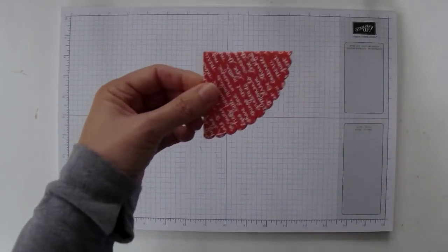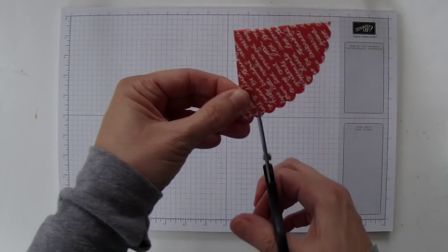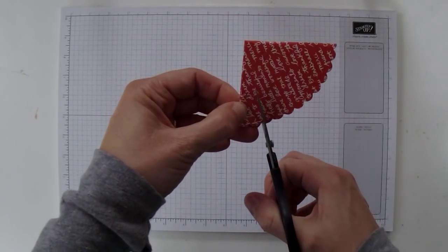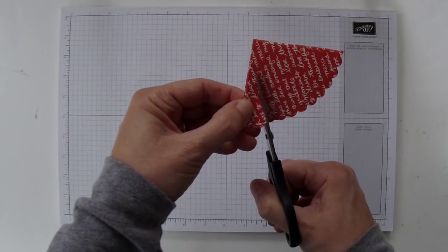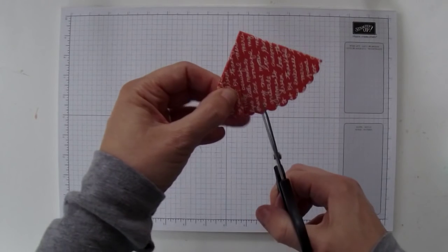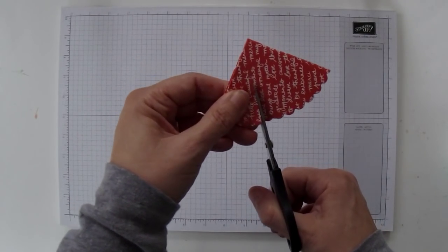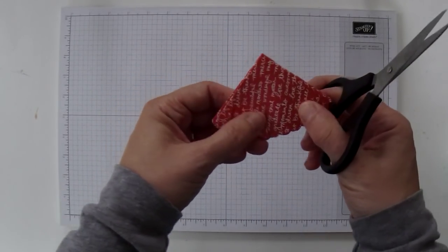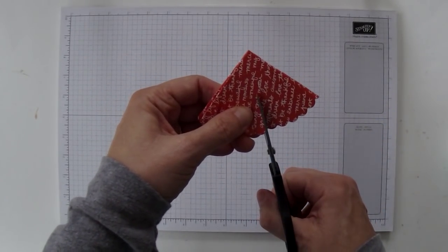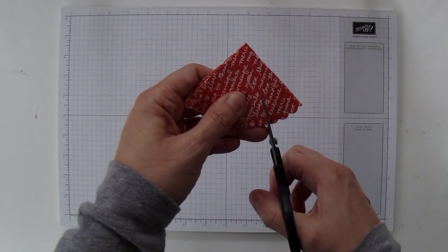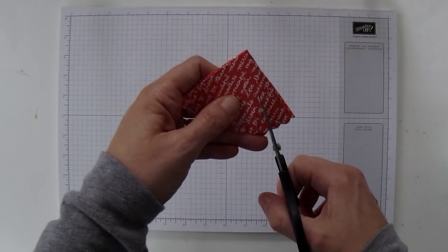And then we're going to take some scissors and cut down about three quarters of an inch to an inch. These will be the petals, so you want to keep them about the same distance down. You don't want to cut all the way down because we're going to cut part of this corner off at the bottom. So just cut in about three quarters of an inch down each of the little scallops.